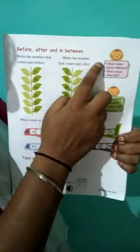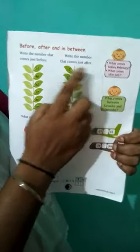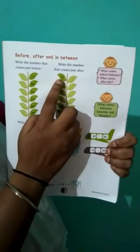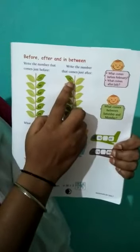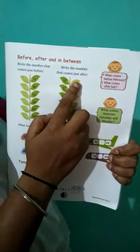Now second is write the number that comes just after. So here your question is 19. So what is the number comes after 19? So answer is 20. 20 comes after 19.